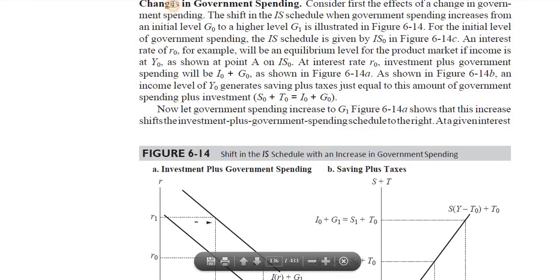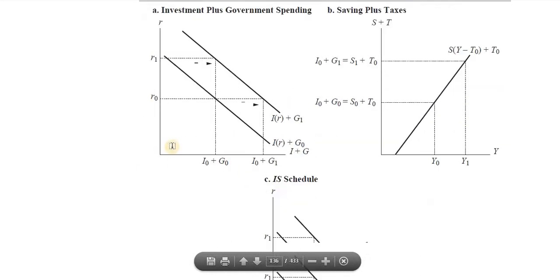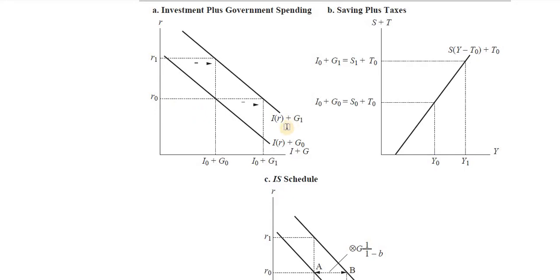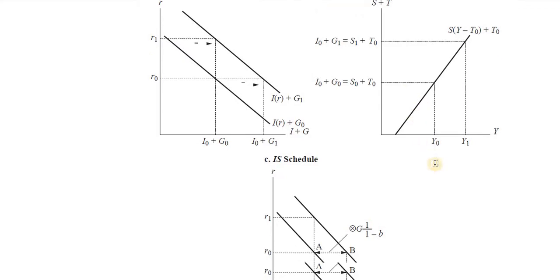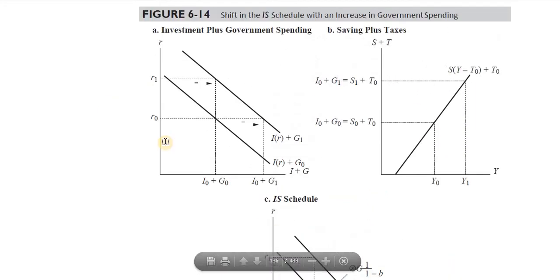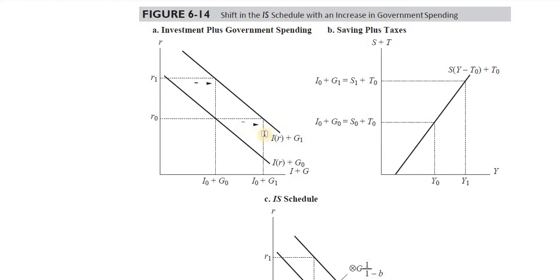Now, what can cause a shift in the IS curve? Factor number one: changes in government spending. At the same rate of interest r0, if government increases its expenditure — initially at I0, G0, giving equilibrium S0, T0, and income y0 — government expenditure is not dependent on the rate of interest. So even if the rate of interest stays the same, the government would be incurring extra expenditure for welfare considerations. Government spending shifts the I plus G curve rightwards.